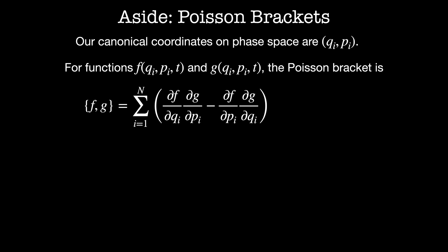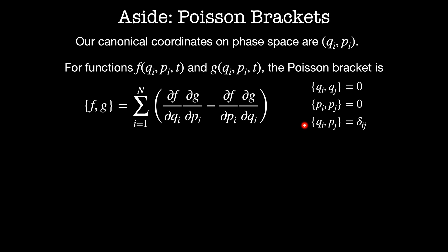We can take the Poisson bracket of any functions we'd like, but we'll start with the simplest functions q and p. The Poisson bracket of q_i and q_j is zero, since neither depends on p_i, so both of those derivatives are zero. Likewise, the Poisson bracket of p_i with p_j is also equal to zero. The only term that survives in the Poisson bracket of q_i with p_j is dq_i/dq_i times dp_i/dp_i, and this gives one when i equals j and zero otherwise — we can write this compactly using the Kronecker delta. This last statement, that the Poisson bracket of q_i with p_j equals delta_ij, is the definition of q_i and p_j being conjugate coordinates.